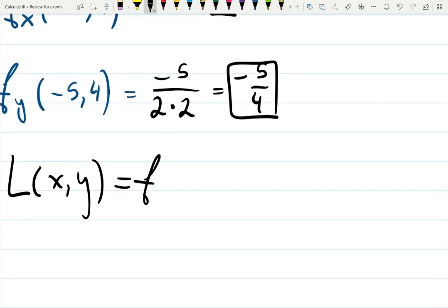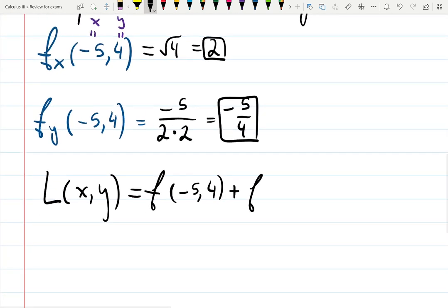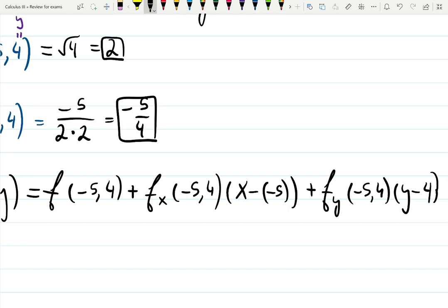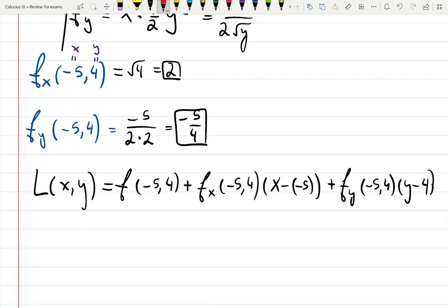So it will be f at (-5, 4), which actually we did not find yet. We should have found it before. Plus the partial derivative at (-5, 4) times (x - (-5)), plus the partial derivative with respect to y at (-5, 4) times (y - 4). That's what we're doing here. We found this and this, but forgot to find this, so let's do it over here.